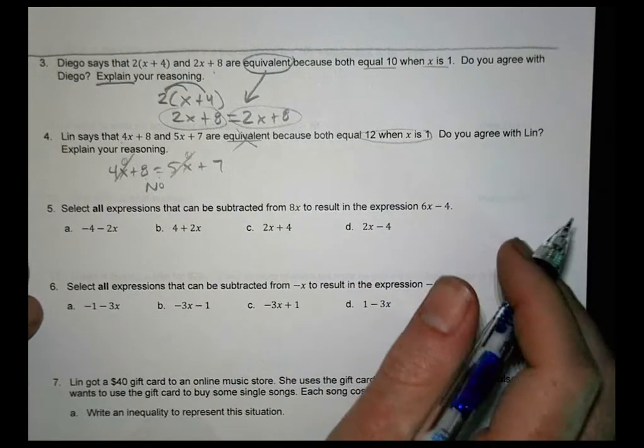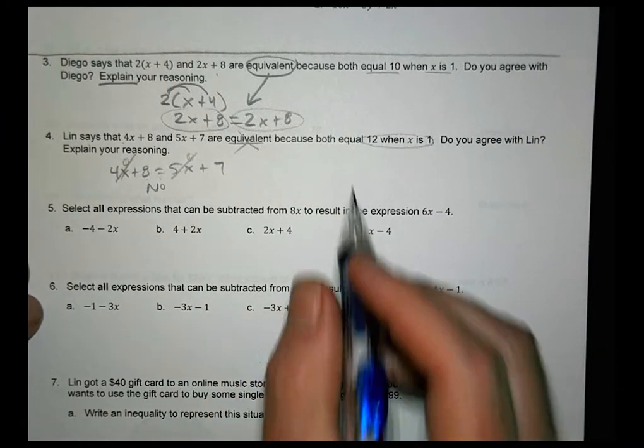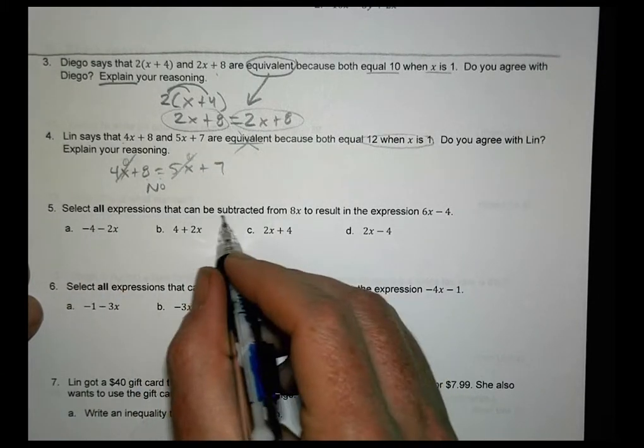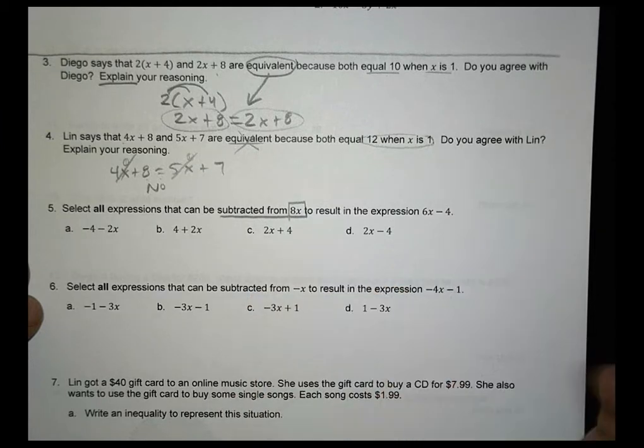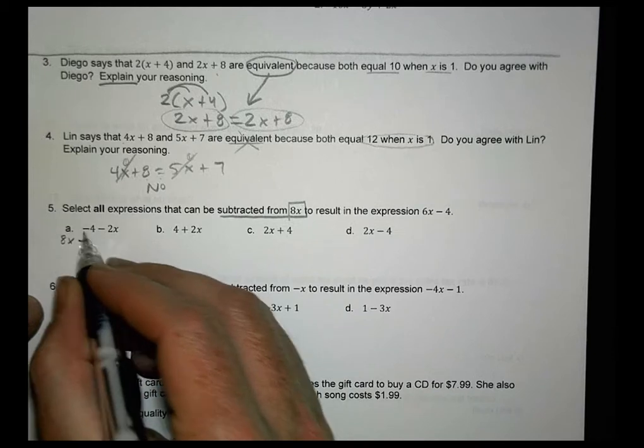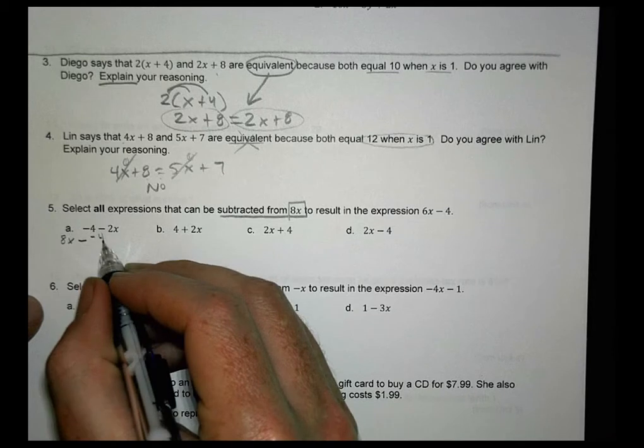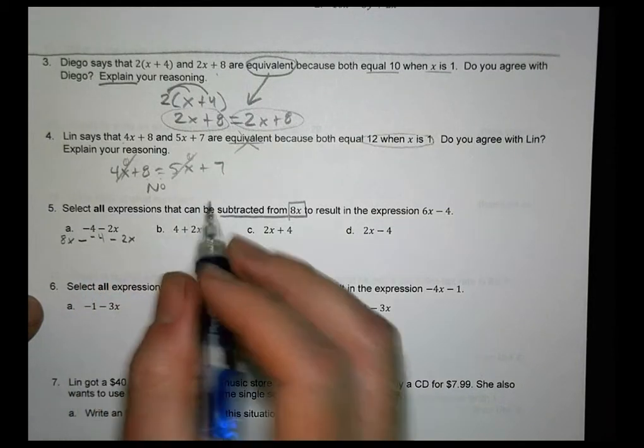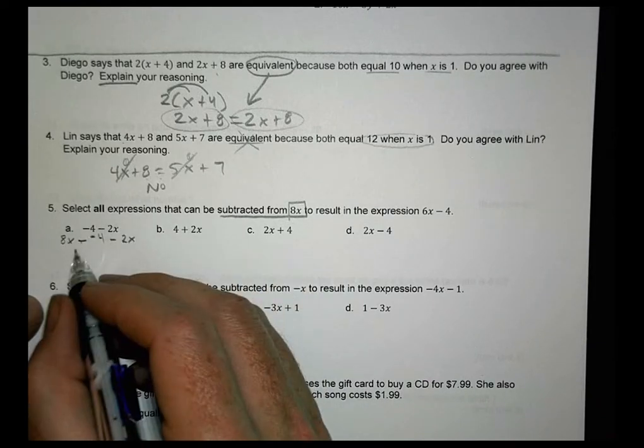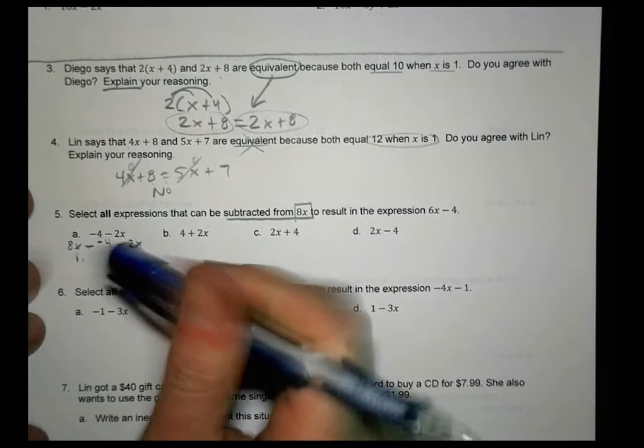I had to do this one a couple times. I actually did it before and then I thought about it again. And actually, this is my second time making this video, believe it or not. I had to think about what it says here. It says select all expressions that can be subtracted from 8x. Meaning, let's just do 8x minus this stuff. Subtracted from 8x minus negative 4 minus 2x. All right. So that's there. So 8x minus a minus 4. That becomes plus.